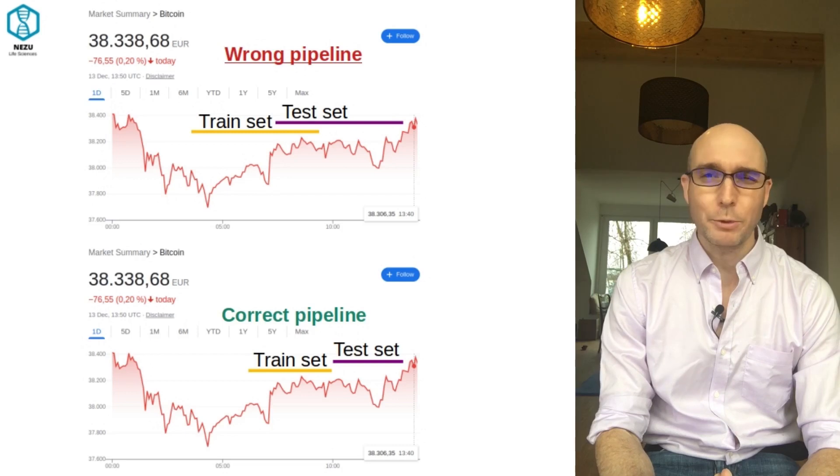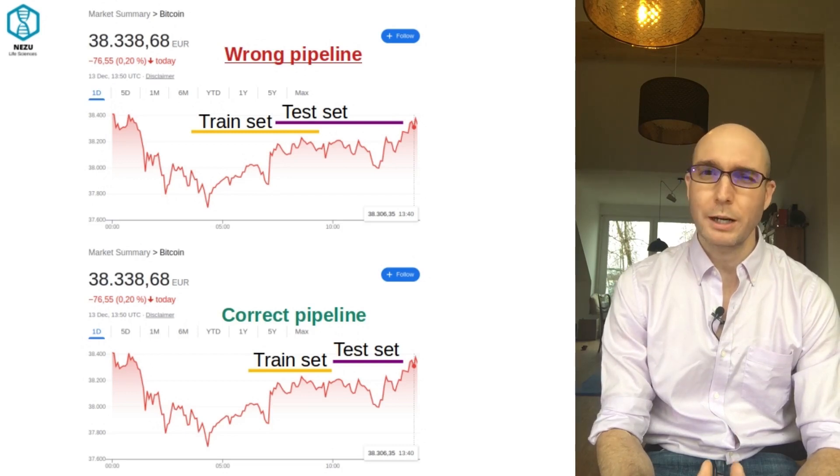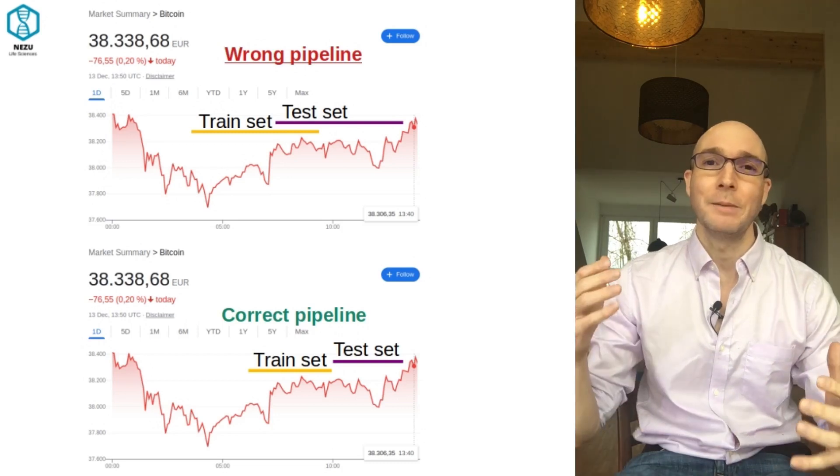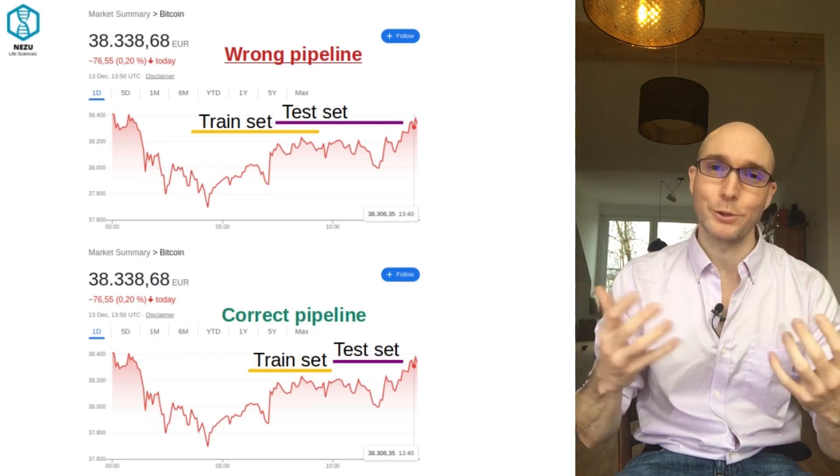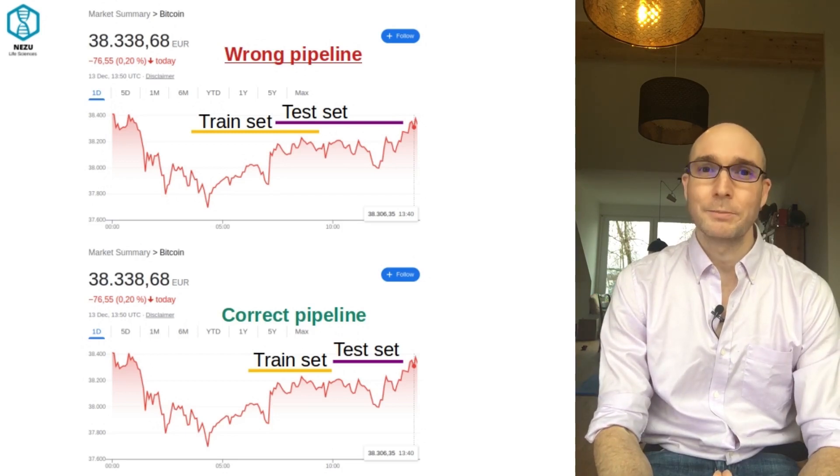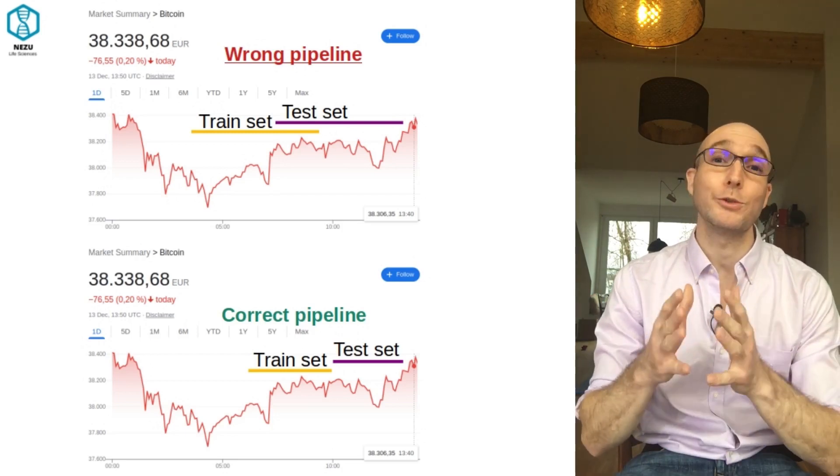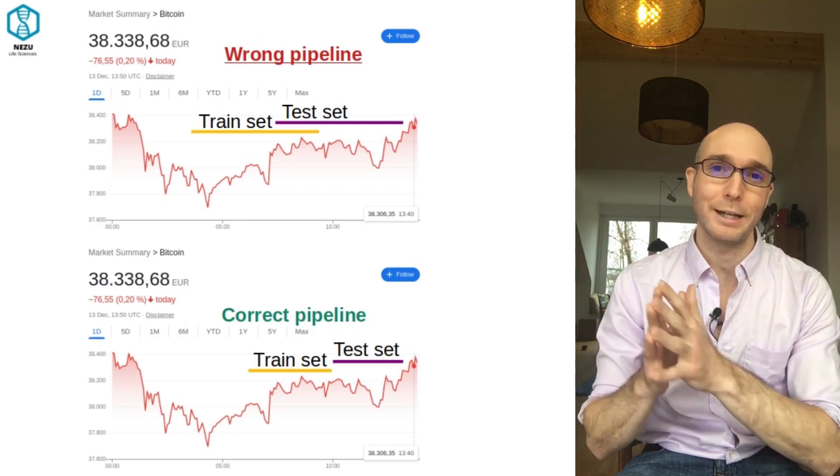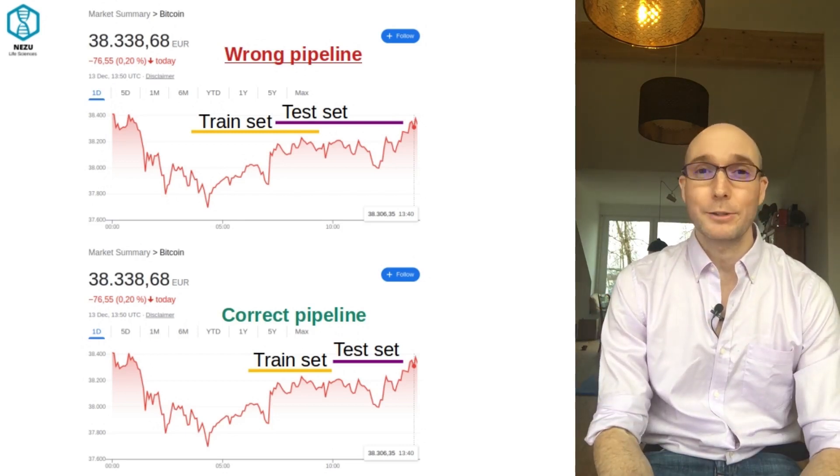This type of leakage is pretty hard to spot because it requires a very good understanding of the temporal relationship inside your data. So if you have temporal data, try to split things using a chronological order.